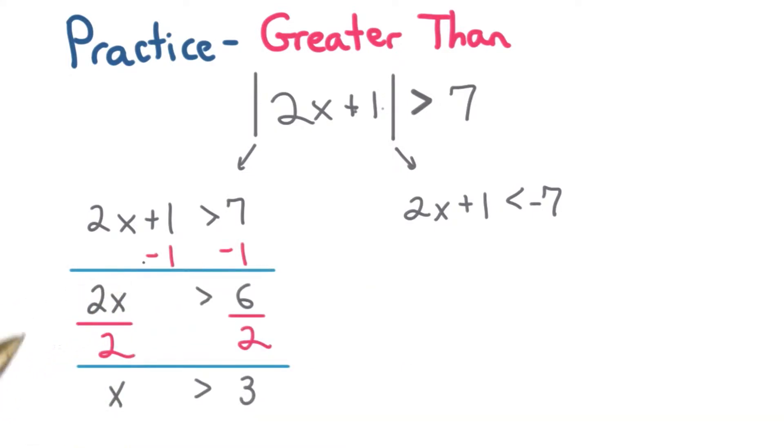We can subtract 1 from both sides and then divide by 2, so x is greater than 3. That's one part of our solution.